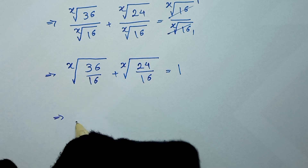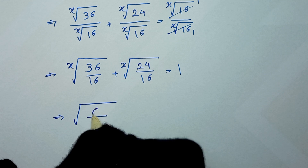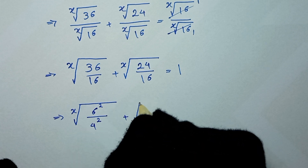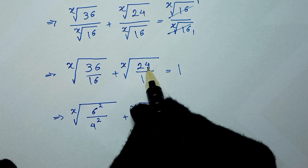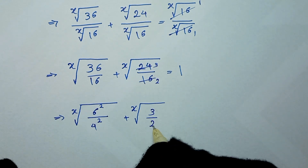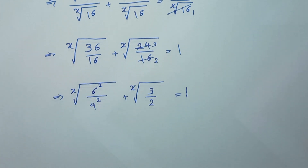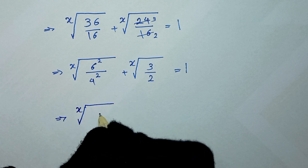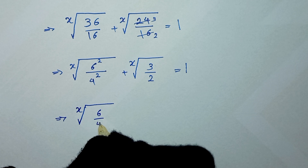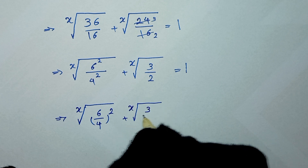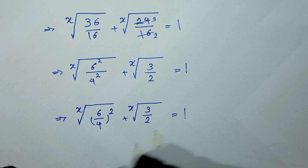Here we can write 36 as 6 to the power of 2, so x-root of 6² over 4² (since 16 = 4²). For the second term, 24/16 simplifies: 24 divided by 8 is 3, and 16 divided by 8 is 2, giving 3/2. So we have x-root of (6/4)² plus x-root of 3/2 is equal to 1.